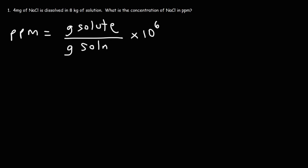There are many different forms of concentration. Perhaps you've heard of molarity, molality, normality, mass percent, or volume percent. All of these you can use to represent the concentration of a solution. But in this video, we're going to focus on ppm and ppb.